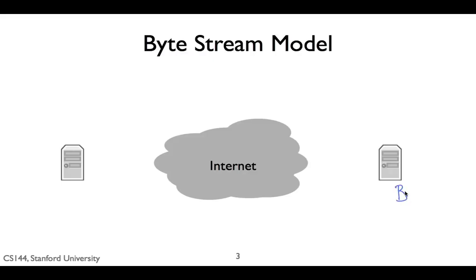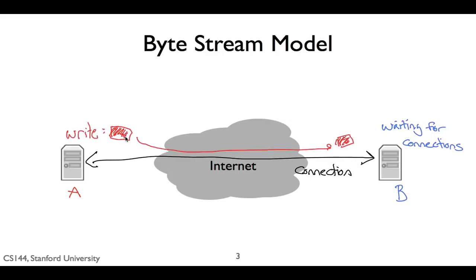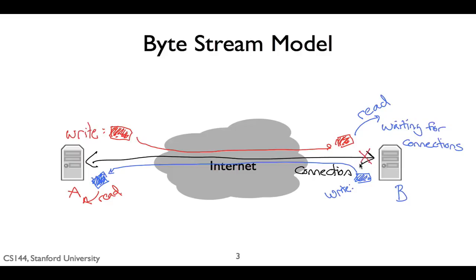Let's walk through what this looks like. Computer B, on the right, is waiting for other computers to connect to it. Computer A, on the left, wants to communicate with B — for example, it could be a mobile phone running a web browser. A and B set up a connection. When A writes data to the connection, this data travels over the network and B can read it. Similarly, if B writes data to the connection, that data travels over the network and A can read it. Either side can close the connection — for example, when the web browser is done requesting data from the web server, it can close the connection. The server can also close the connection.